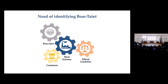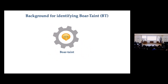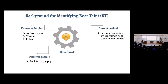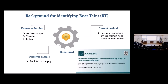Obviously some background work has been done in this field. The known molecules for boar taint are androstenone, skatole, and indole. Usually for such analytical analysis the preferred sample is the back fat of the pig. The current method in industry is that specific people standing next to the meat, heating it, smelling it, and giving a score for how much bad smell it has — basically a sensory evaluation by human nose upon heating the meat.